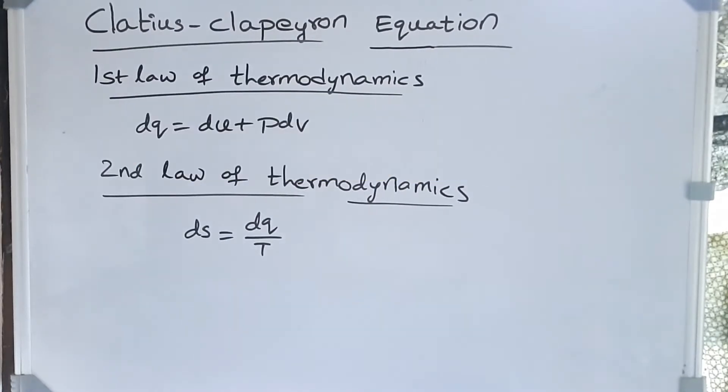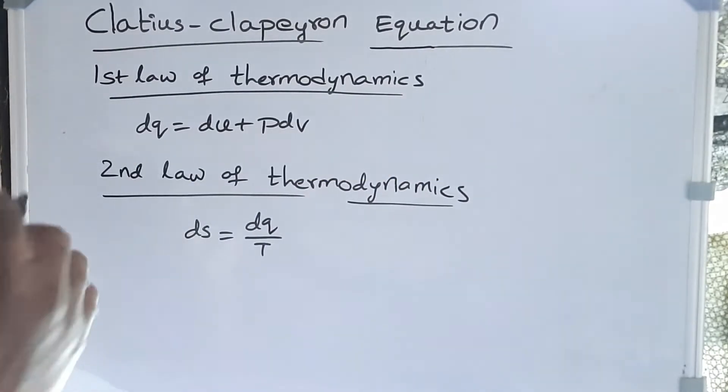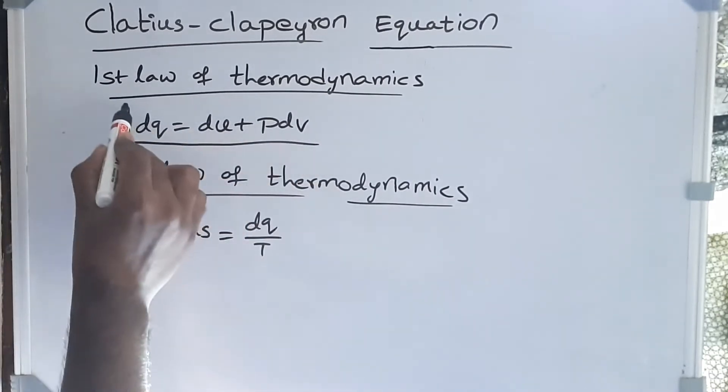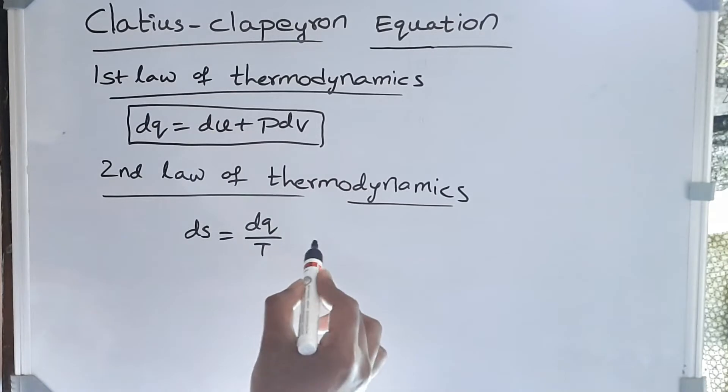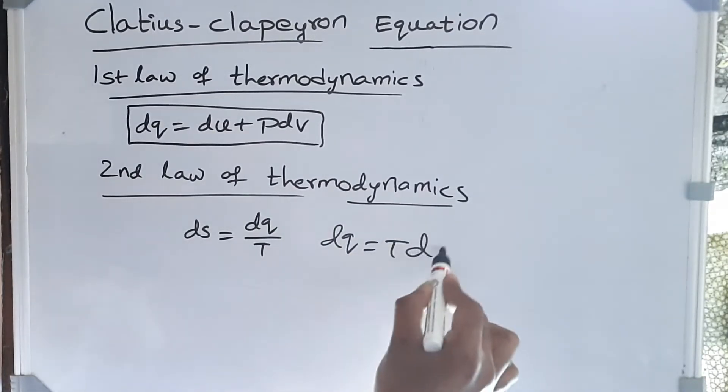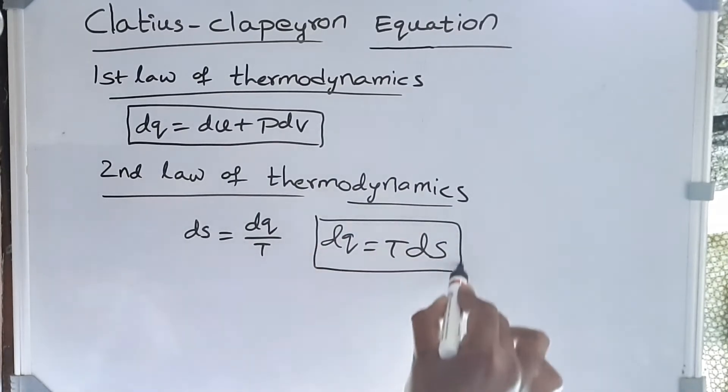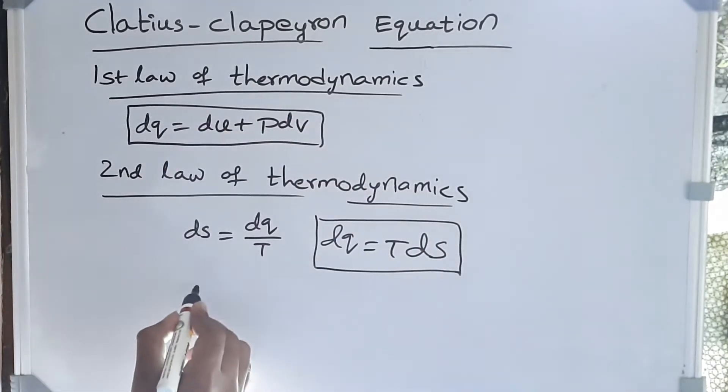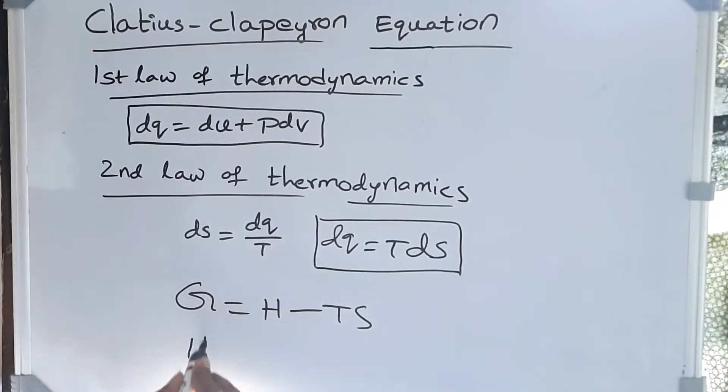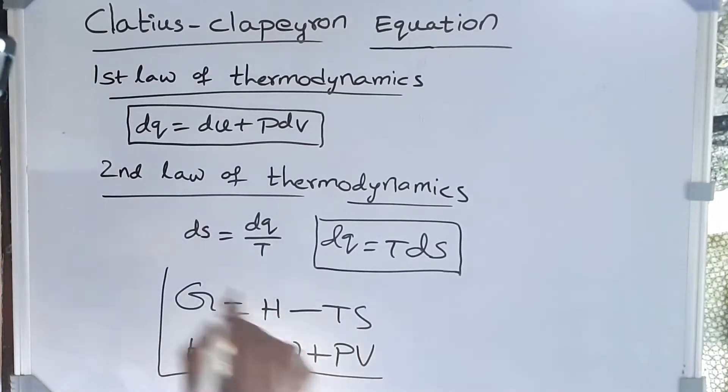Friends, here we're going to use first law and second law of thermodynamics while deriving the Clausius-Clapeyron equation. Please remember these equations: δQ = TdS, Gibbs equation G = H - TS, and enthalpy we can write as U + PV. Friends, remember these four equations.